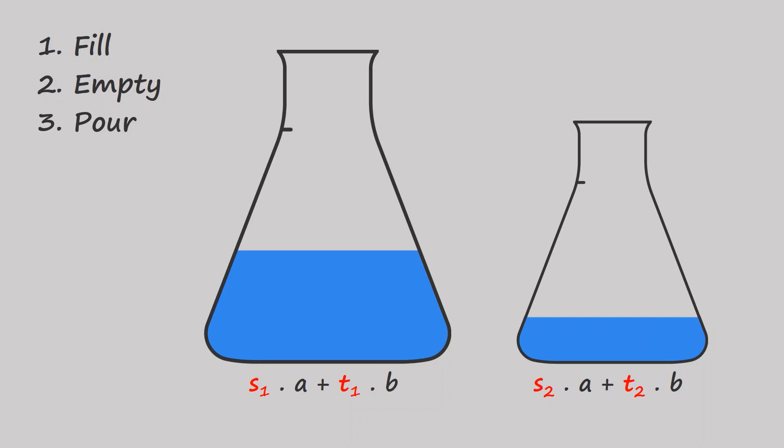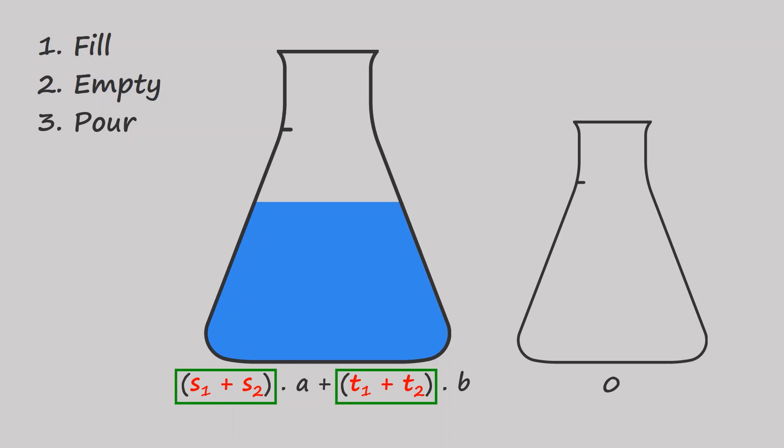In the first case, one flask will be empty, while the other flask will have the sum of water in both flasks. We saw earlier that zero is an integer linear combination. The sum of two integer linear combinations will also be an integer linear combination, because the new coefficients will just be sums of integers.